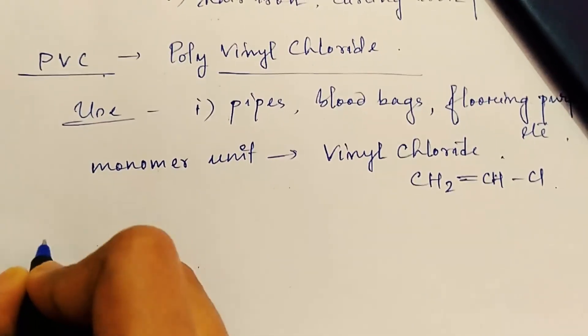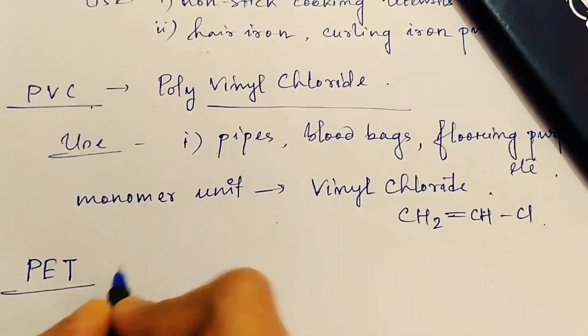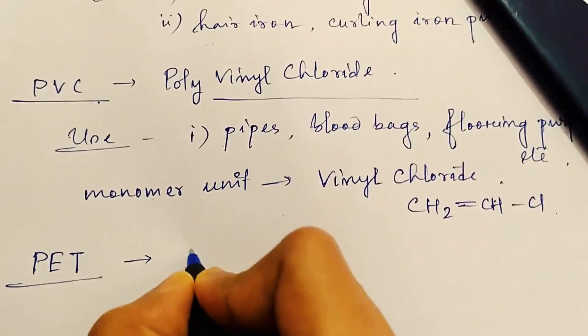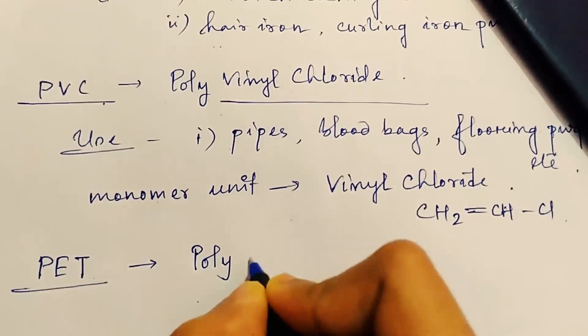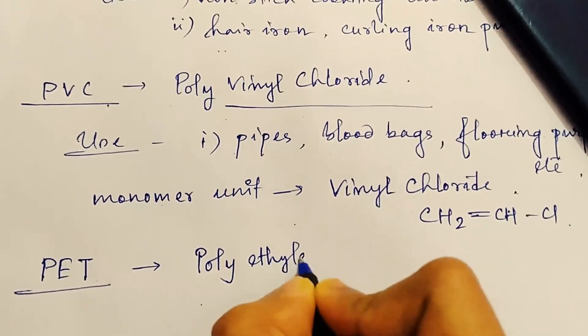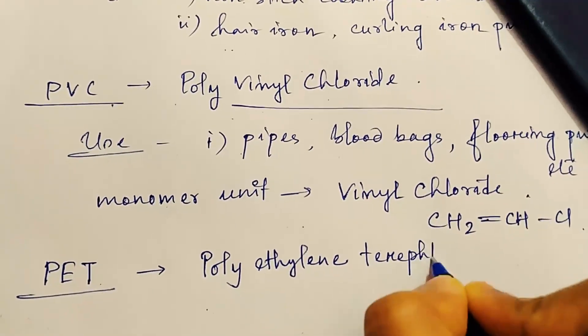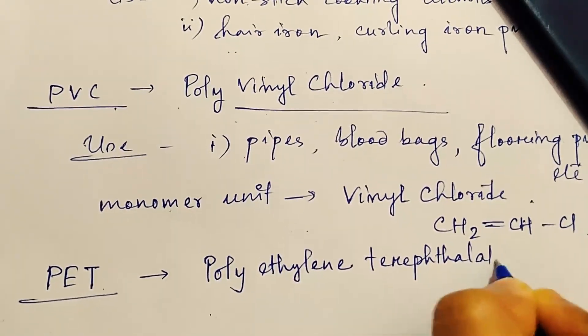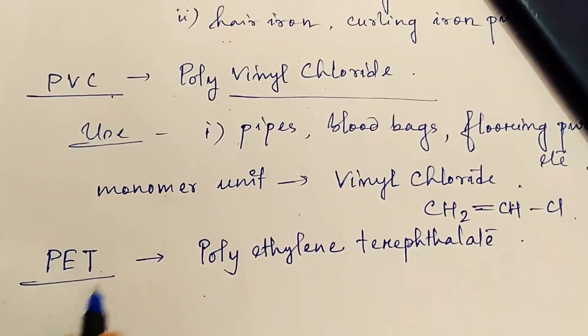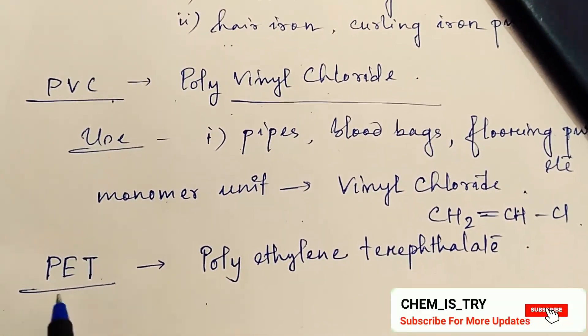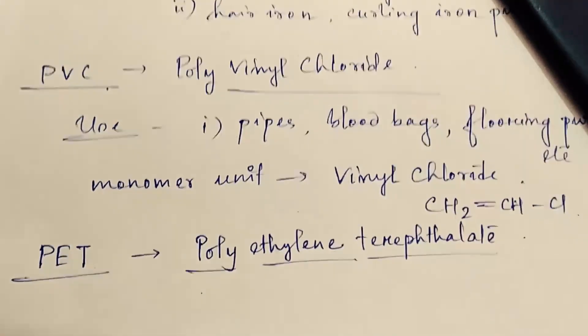Now next come PET. Full name is polyethylene terephthalate. It also comes many times in the exam that is what is the full form of PET, the answer is polyethylene terephthalate.